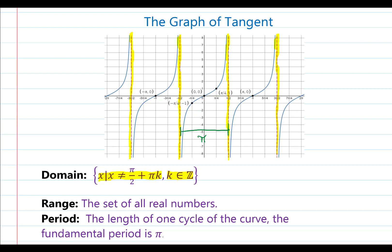Finally, there are three important or critical points with each curve. You'll see that you have an x-intercept with each curve, and that is probably the most important point. So we have negative pi comma 0, 0 comma 0, and pi comma 0 — that's the midpoint between the vertical asymptotes on the x-axis. We also have these additional points: negative pi over 4 comma negative 1, and pi over 4 comma positive 1.